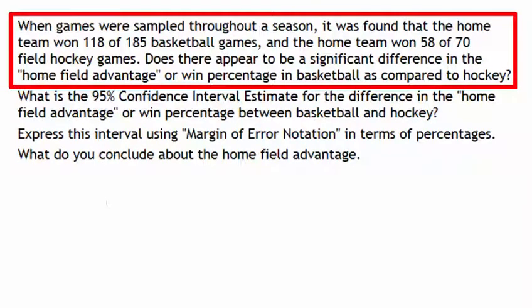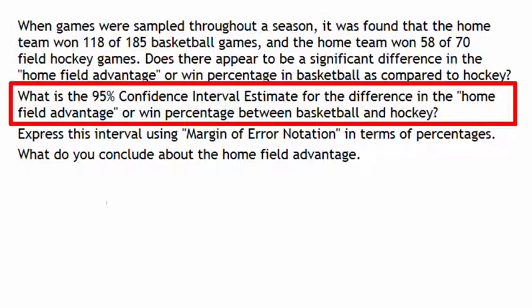When games were sampled throughout a season, it was found that the home team won 118 of 185 basketball games and the home team won 58 of 70 field hockey games. Does there appear to be a significant difference in the home field advantage or win percentage in basketball as compared to hockey? What is the 95% confidence interval estimate for the difference in the home field advantage or win percentage between basketball and hockey?